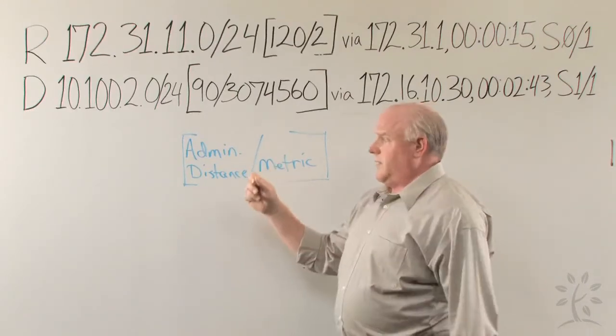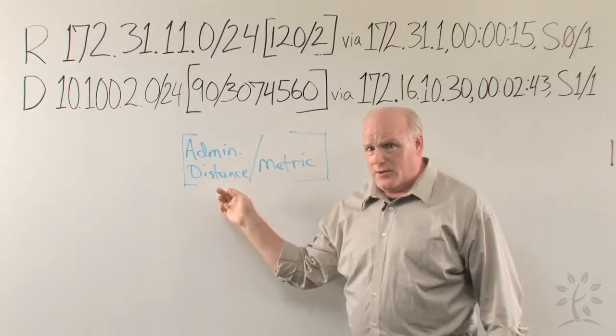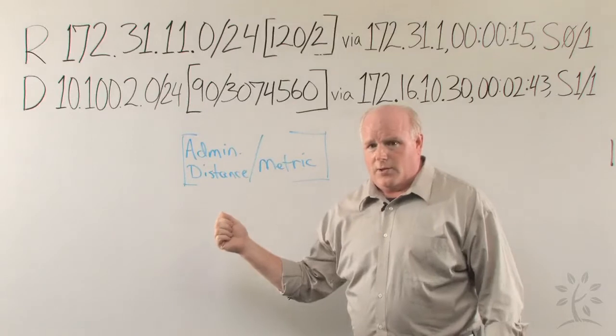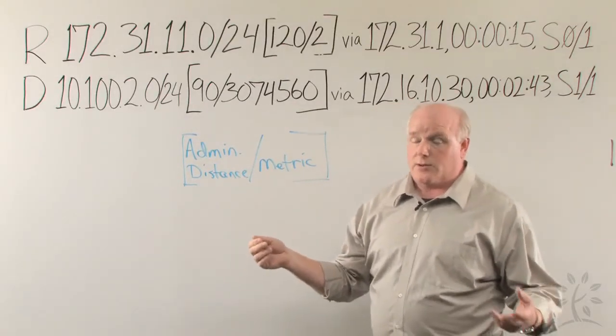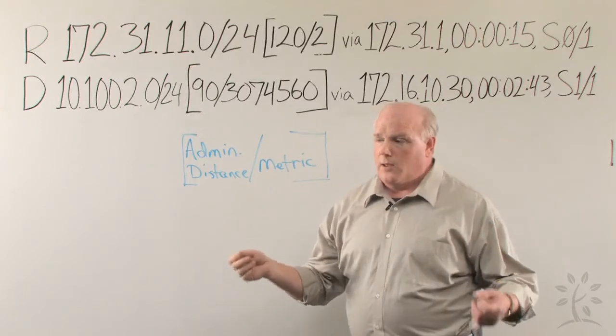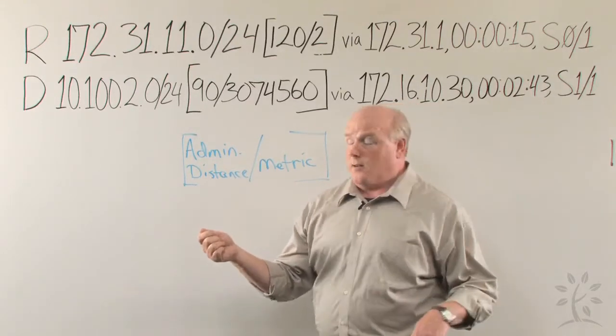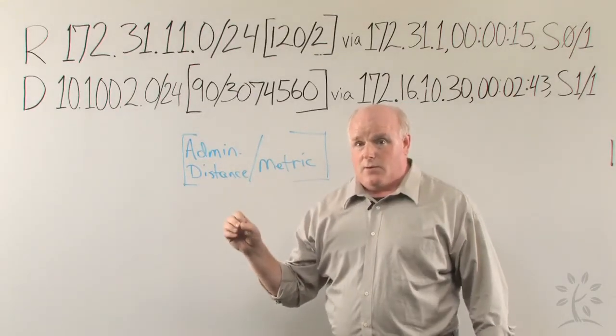Now, administrative distance, you know, reliability of routes and administrative distance go hand in hand. The more reliable the route, the lower the administrative distance. Now, what could be more reliable than a route that's directly connected to your router? If two routers are directly connected, or if a network is directly connected, that is an administrative distance of zero.